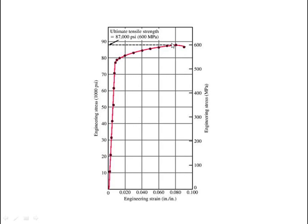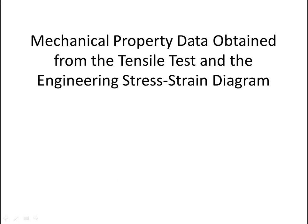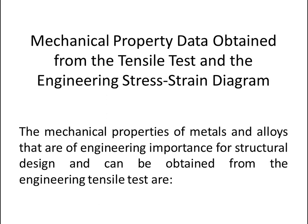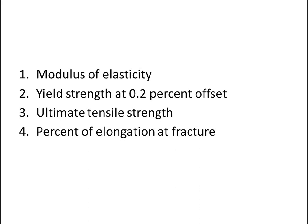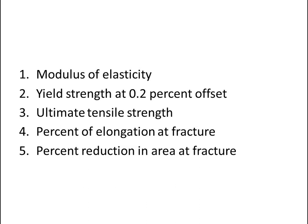This point on the curve is called the ultimate tensile strength. The mechanical properties of metals and alloys of engineering importance for structural design that can be obtained from the engineering tensile test are: first, modulus of elasticity; second, yield strength at 0.2 percent offset; third, ultimate tensile strength; fourth, percent elongation at fracture; and fifth, percent reduction in area at fracture.